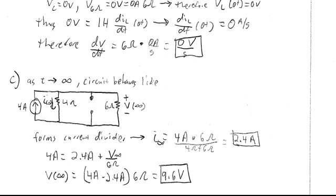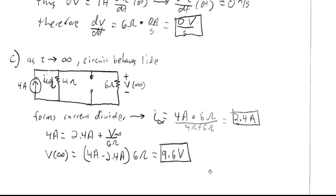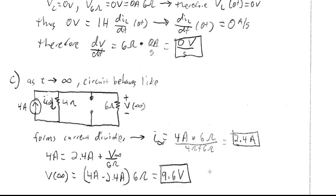You can verify this by applying KCL: 4 amps in equals 2.4 amps through the 4 ohm resistor plus V(∞)/6 ohms, which also yields V(∞) = 9.6 volts. That gives you all the information needed to solve problem 8.5 on the circuit analysis homework.